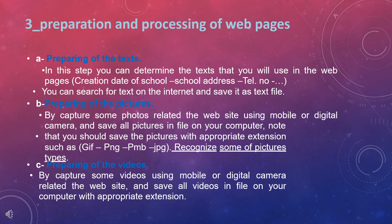Stage three — preparation and processing of web pages. Part A: preparing the texts. In this step you determine the texts you will use in the web pages, such as creation date, school name, school address, and telephone number. You can search for text on the internet and save it as a text file. Part B: preparing the pictures, by capturing photos related to the website using a mobile or digital camera and saving all pictures in a folder on your computer.